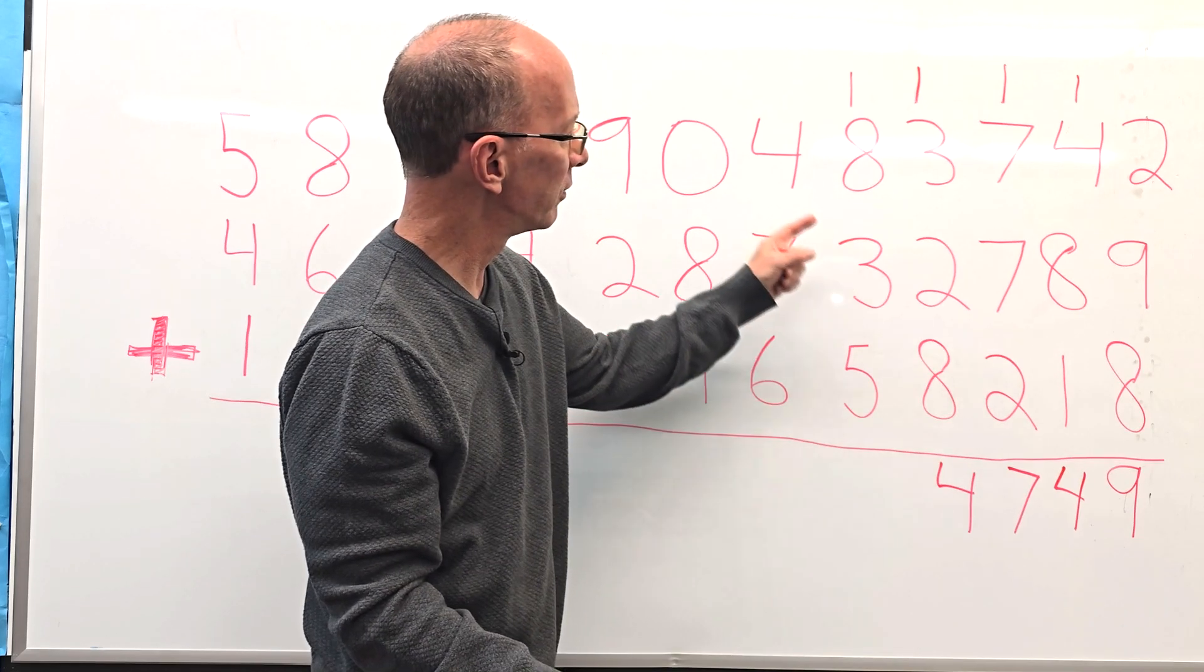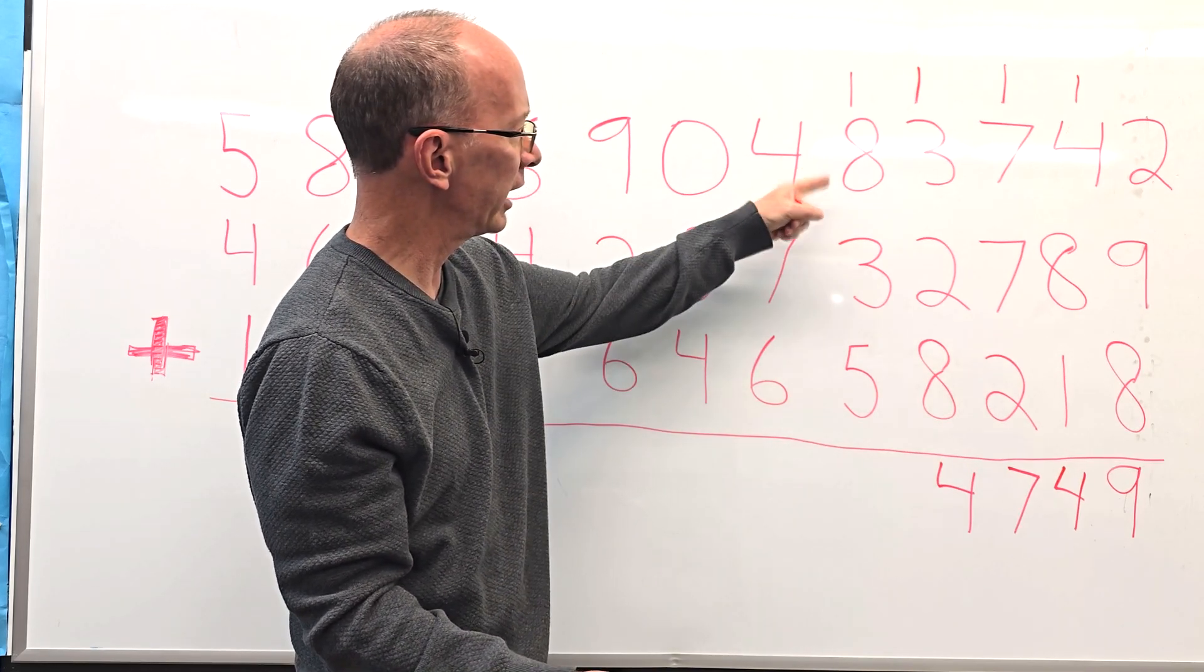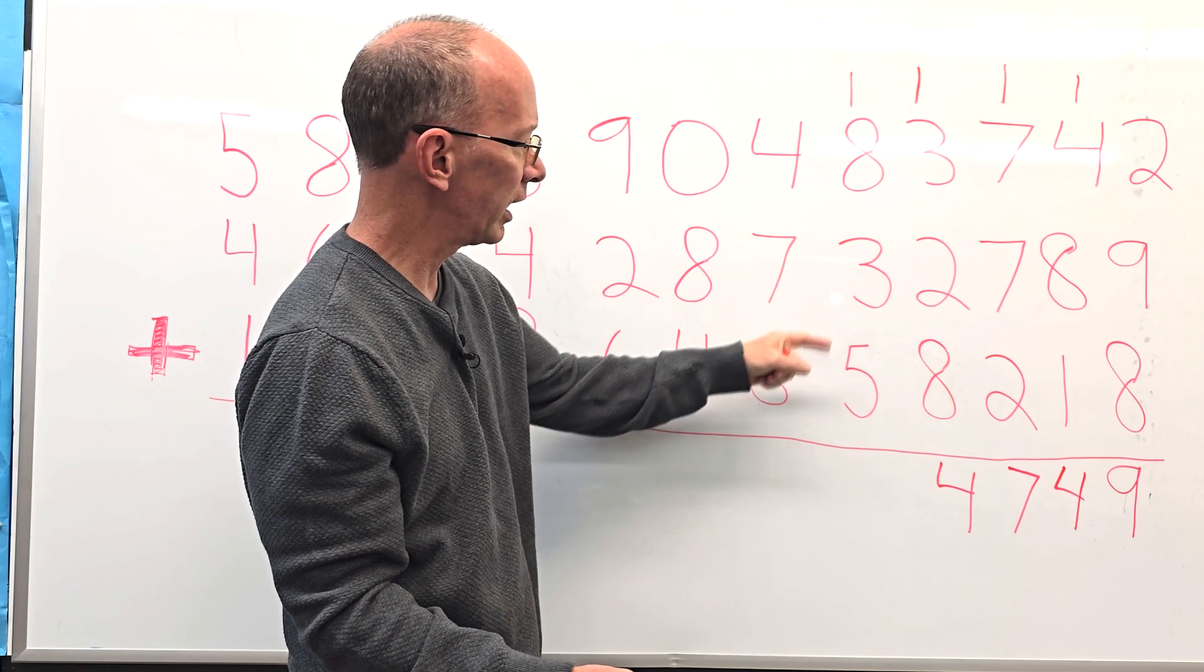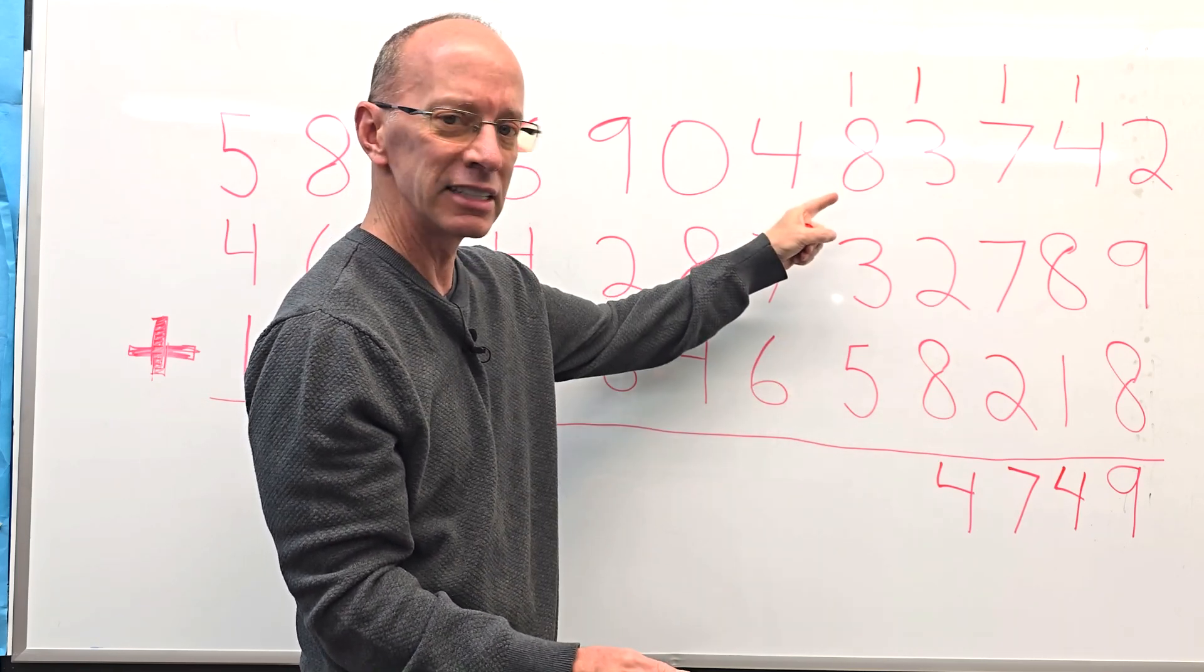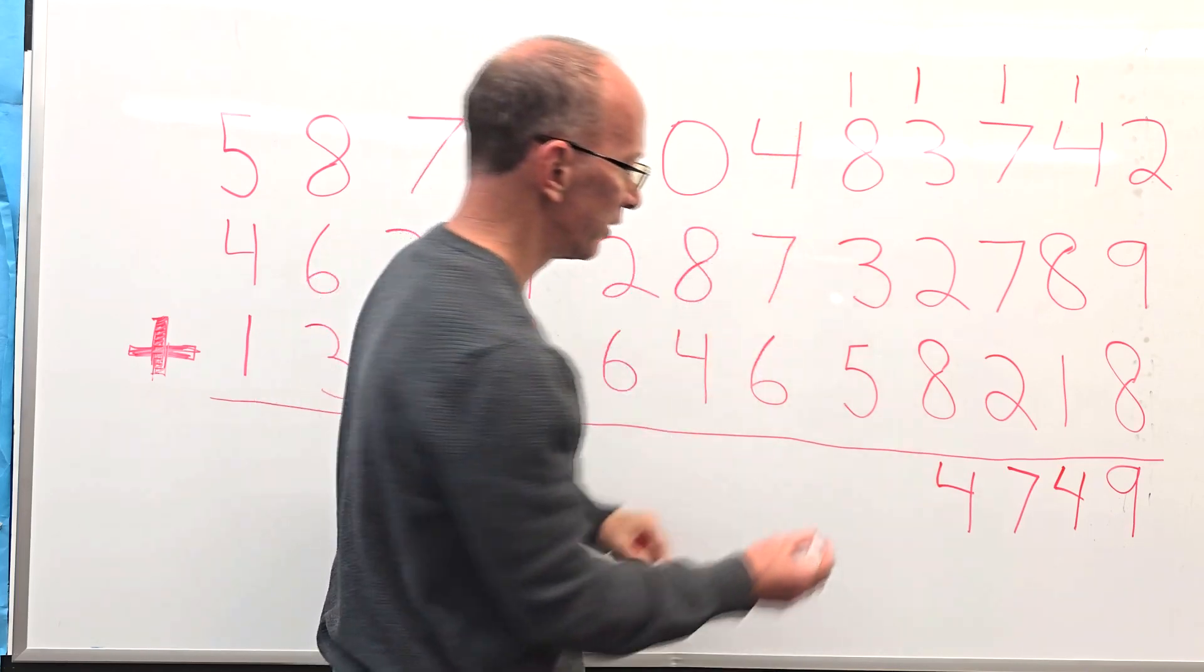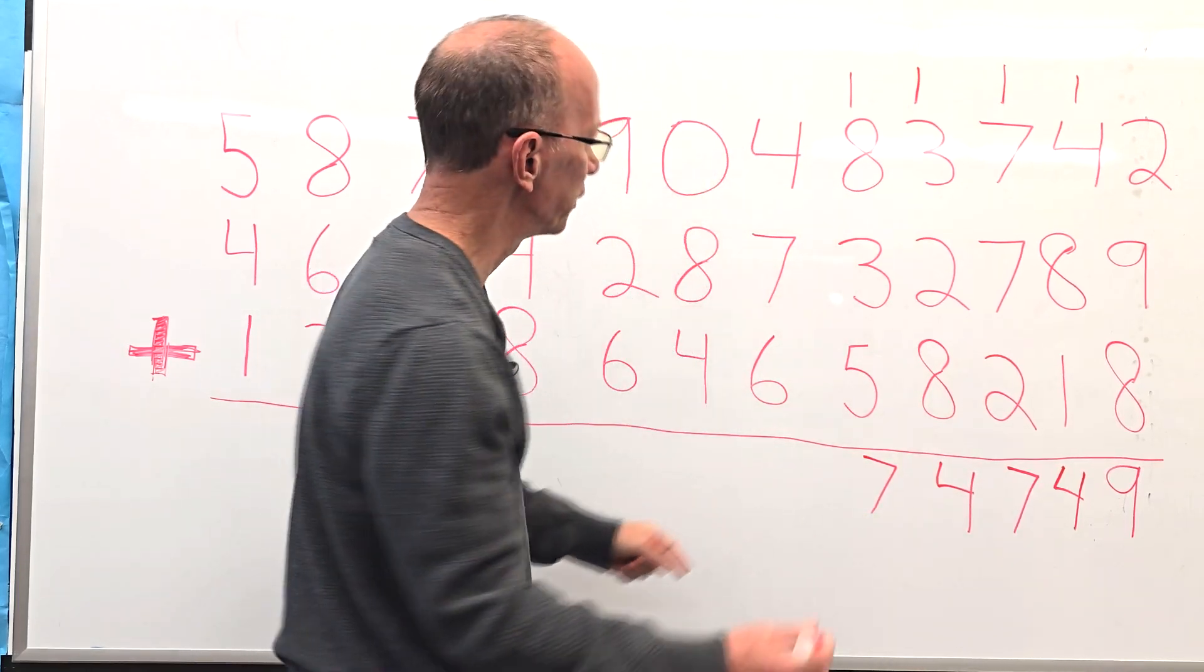And then we have 8. Let me see here. I have the 8, and the 1 is 9. And 5, 6, 7, 8. So I can do 8 plus 8 is 16, and then plus the 1 is 17. It doesn't matter which way you go. Whatever is easier for you.